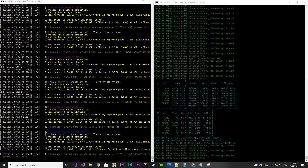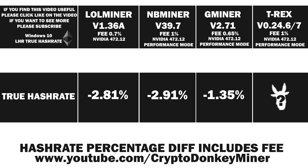The diff percentage for G Miner is 1.35%. Considering that these true hash rate diff percentages also include the fee, it is under 1% wrong. That is really, really well done. Now it's time to have a look at T-Rex Miner version 0.24.6.